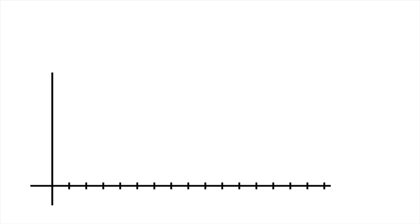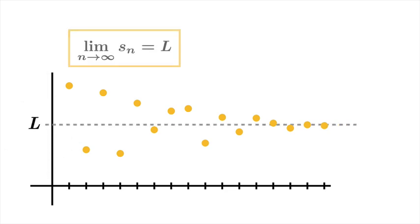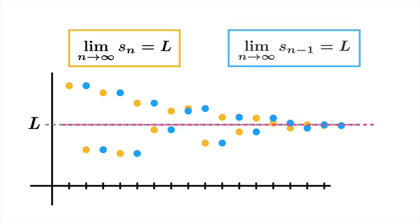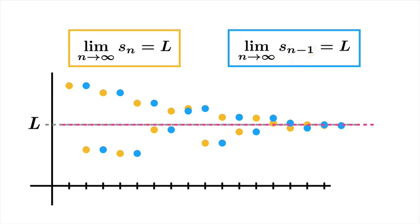We need a lemma on shifted sequences to make our job easier. Suppose we have a sequence S_n that converges to some limiting value L. We take another copy of this sequence and shift it to the right one unit — that is, we look at the sequence S_{n-1}. By replacing n with n-1, we've shifted the graph to the right one unit. Shifting the graph horizontally doesn't change any horizontal asymptote, so both sequences have the same limiting behavior: one converges if and only if the other converges, and they converge to the same limit.